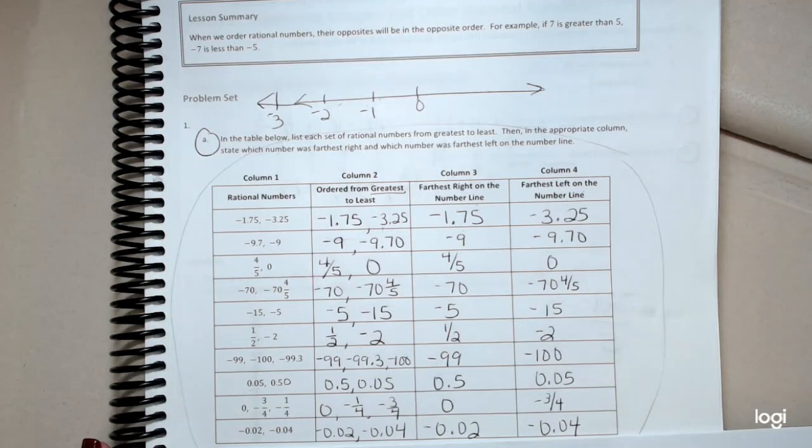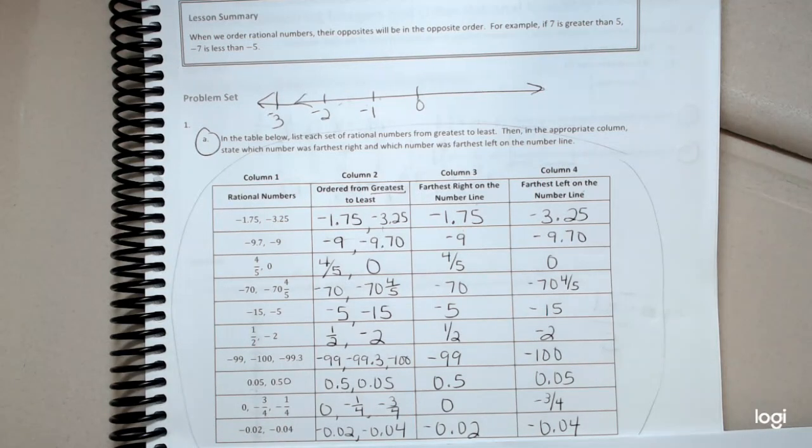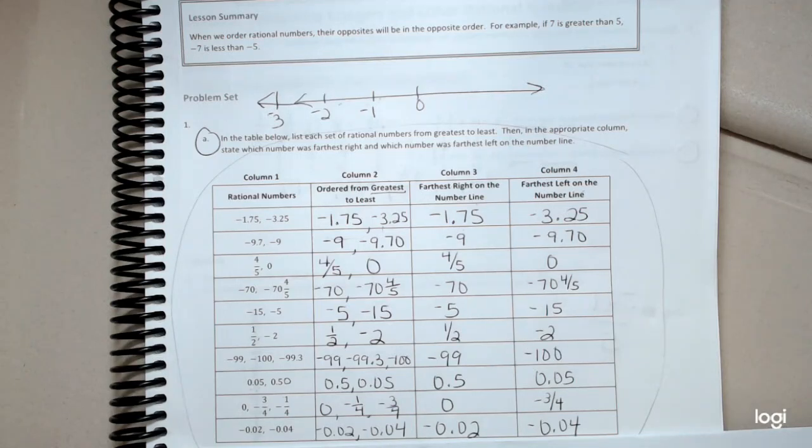And finally, I have the last one with decimals. Remember, I look in terms of money, two cents, four cents. Well, I know four cents is larger than two. However, when I'm dealing with negatives, it's the opposite. And so I have here negative two-hundredths and negative four-hundredths.